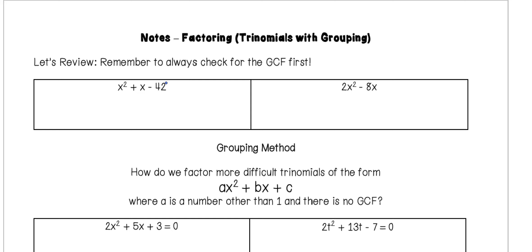Let's review. We always want to remember to check for the GCF first. When we're looking at this first example, we have a coefficient of 1 and a constant of negative 42. Between all of those, there are no GCFs and no X terms that we can factor out. So we're going to use our shortcut method, where we're looking for factors of negative 42 that add to positive 1.